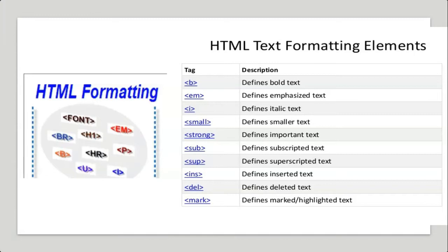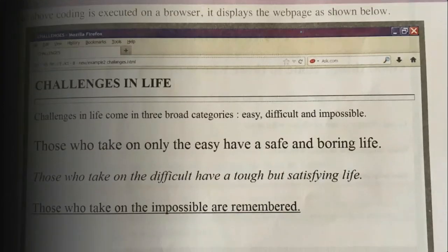The BIG tag is used to display the text in a font larger than the current font size. The SMALL tag displays the text in a font smaller than the current size. Here you can see an example using all these text formatting tags.